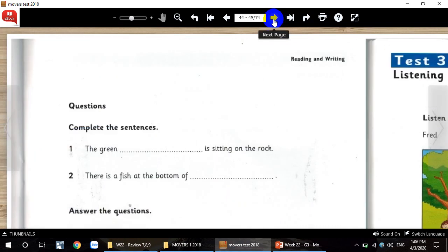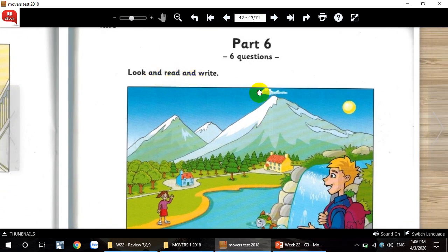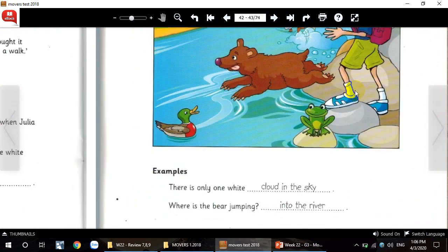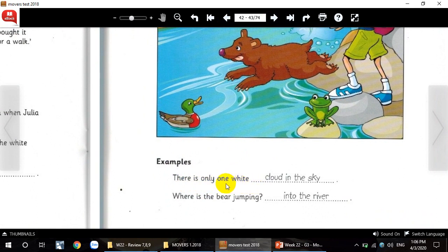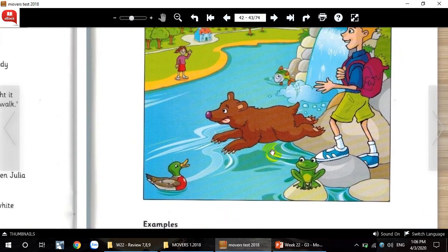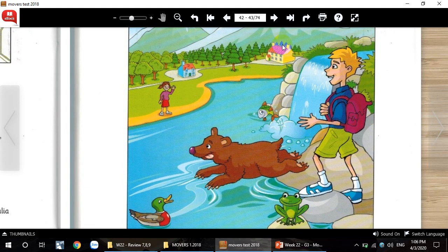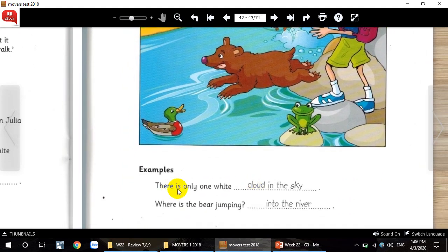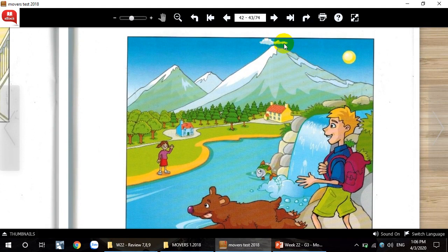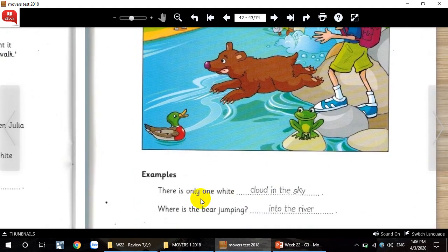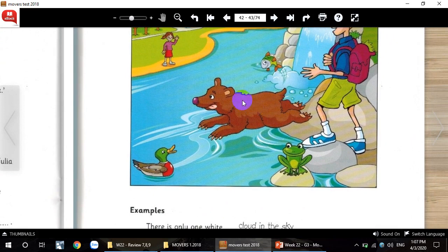Part 6. Look and read and write. You look at the pictures and you give me the answer. For example, there is only one white cloud in the sky. And the other, you write the sentence. It's up to you. You look at the picture. You can write anything that you like. Just focus on the picture and write down the sentence. Please do the worksheet at the end of this lesson.